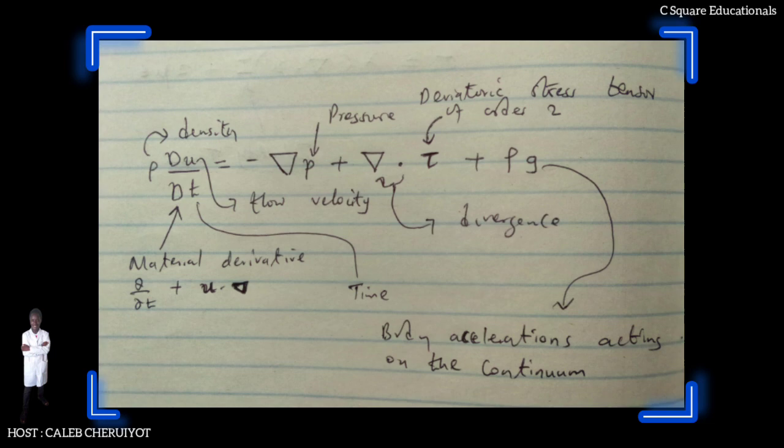Where d/dt is the material derivative defined as ∂/∂t + u·∇. Rho is the density, u is the flow velocity, ∇· is the divergence, p is the pressure, t is time, tau is the deviatoric stress tensor which has order 2, and g represents body accelerations acting on the continuum, for example gravity, inertial accelerations, electrostatic accelerations, and so on.